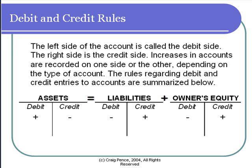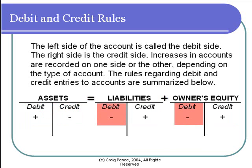The rules regarding recording increases and decreases in these accounts are as follows. Increases are recorded in asset accounts on the left side — the debit side — and decreases are recorded on the right side, the credit side. We reverse this rule for liabilities and owner equity: increases in liabilities are recorded on the right side, the credit side, and decreases on the left side, the debit side. The same is true for the owner equity capital account.